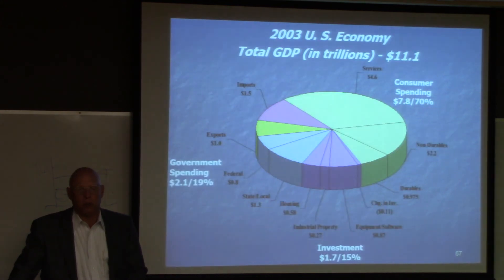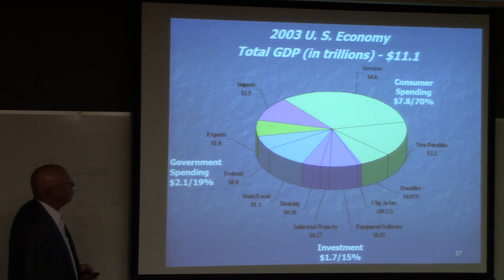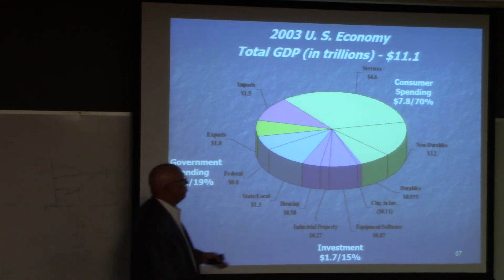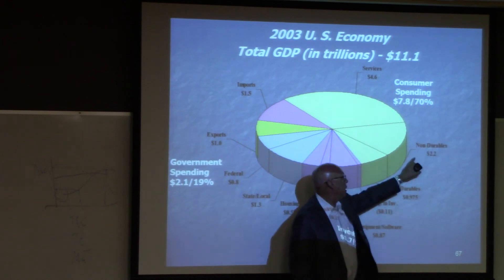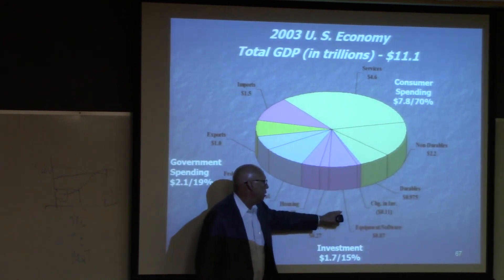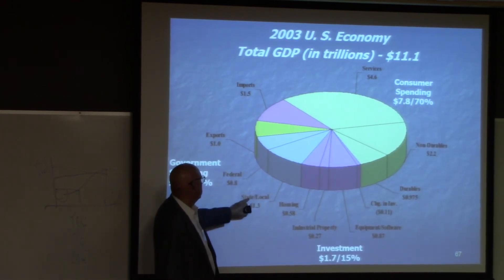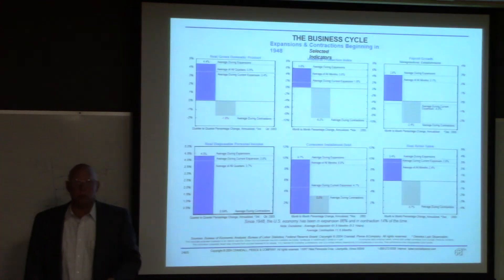Let's take a look at some information critical to the U.S. economy. This is data from back in 2003, so it's old, but you can see consumer spending at 70%, government spending at 20%, investment at 15%, and those components I mentioned earlier — durables, non-durables, inventories, equipment, housing, state and local government, federal government, exports, and imports. You get an idea of the major components of the economy.